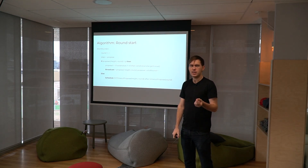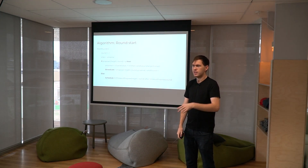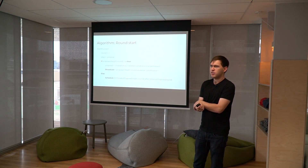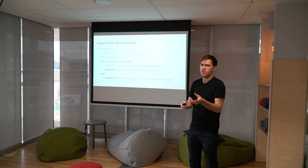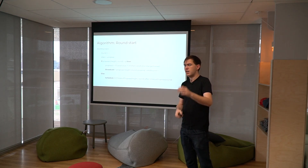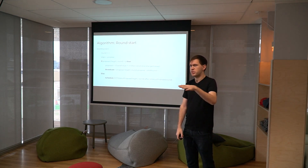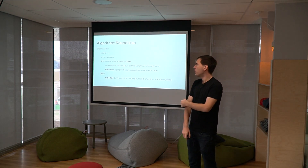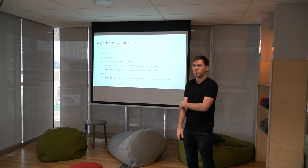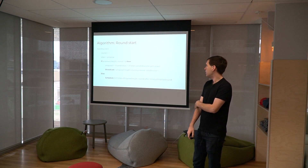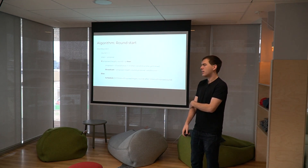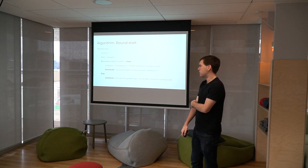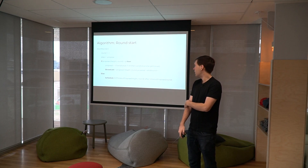If we are the proposer, we either propose the valid value variable or we call some function get_value. We only call get_value if we haven't yet seen any possible decision values. This is essential to how Tendermint terminates. Get_value in the blockchain context assembles transactions into a block, computes the state root and header, and returns that to the consensus instance. But if there already has been a potential decision value, we must propose that instead. Then as proposer, we broadcast that proposal to all other nodes via the gossip network. If we're not the proposer, we just schedule a timeout and move on.